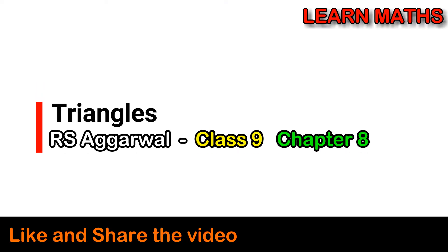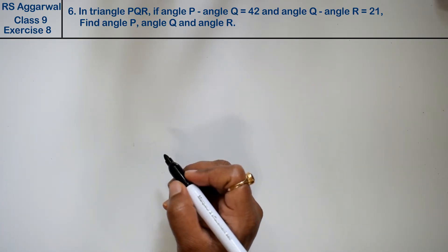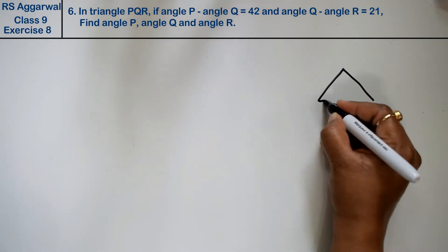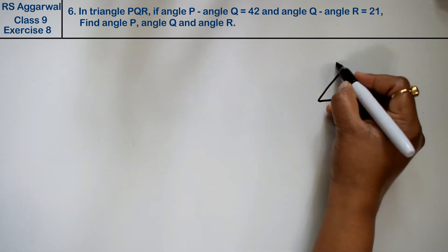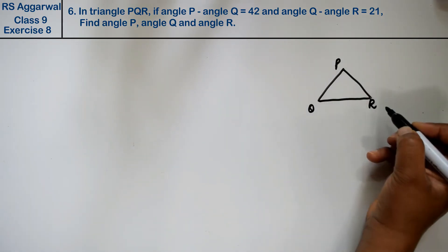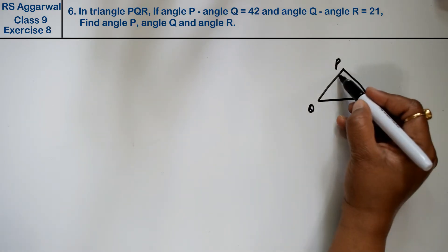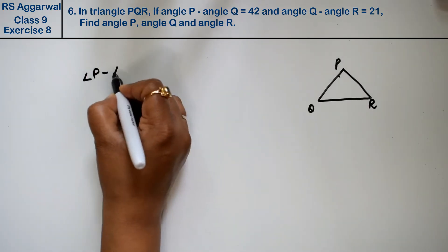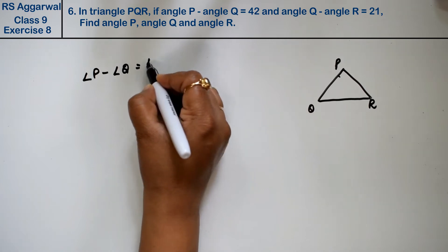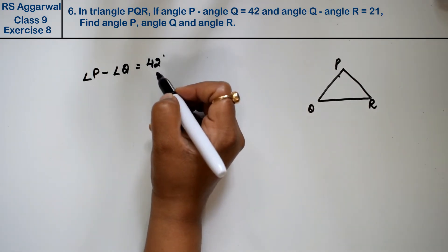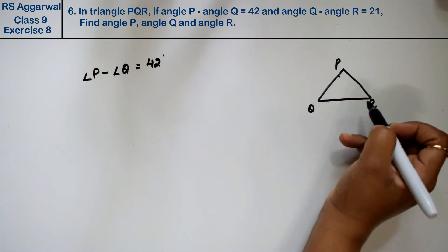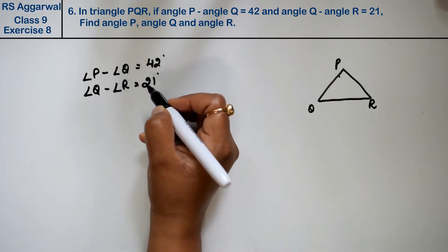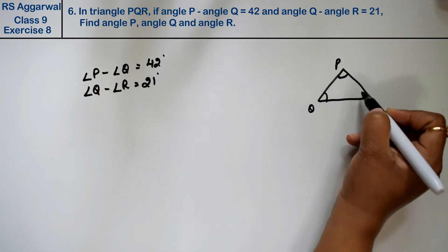Let's do question number 6 of exercise 8, which is on triangles. We will draw triangle PQR. The question states: angle P minus angle Q equals 42 degrees, and angle Q minus angle R equals 21 degrees. We need to find all three angles of triangle PQR.